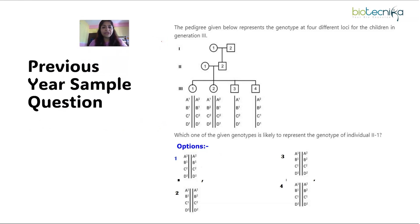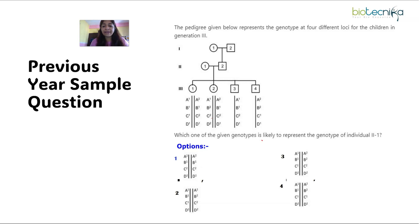The first question says that the pedigree given below represents the genotype of four different loci for the children in generation 3. A chart is given along with the genotype of four different loci on a particular chromosome — which chromosome it is, that is not mentioned anywhere. We are asked which one of the given genotypes is likely to represent the genotype of individual 2-1, who is this female here.